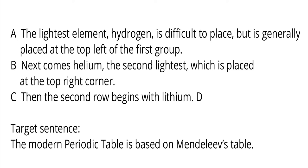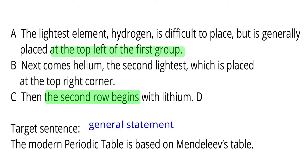Sentences A through C have the spatial order, beginning with top left, top right, and then the second row. The target sentence introduces Mendelov's table, while A through C talk about the details of the table. So the target sentence should be placed before A.